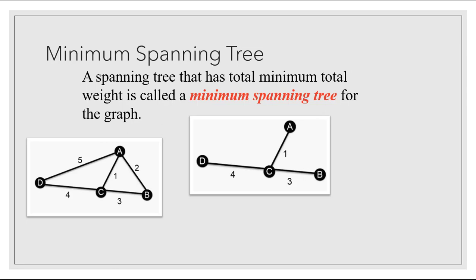One of the spanning trees for this graph is given on the right. It includes the four vertices from the original graph connected by three of the original edges, has no circuits, and it's connected, so it's a tree. Since it includes all of the vertices from the original graph, it's a spanning tree. But is it a minimum spanning tree? We don't know yet, but we can calculate its weight. It has edges of four, three, and one, so it has a total weight of eight.